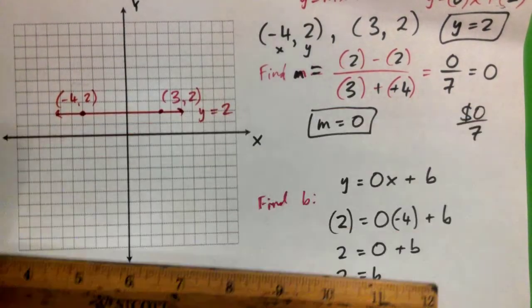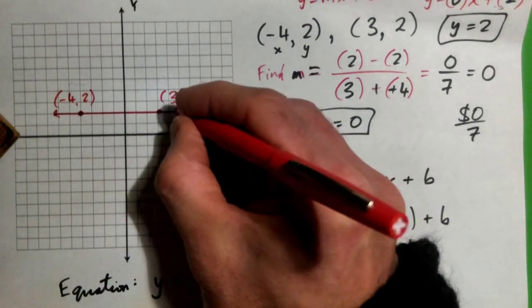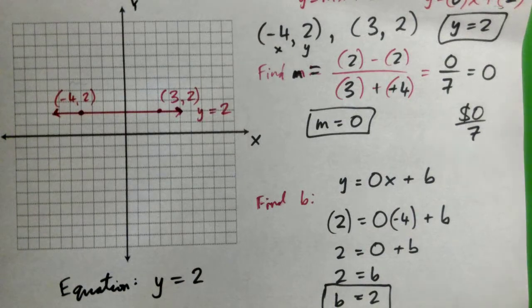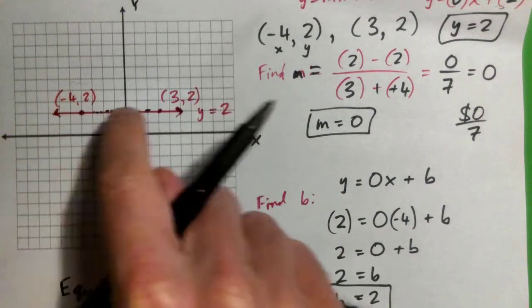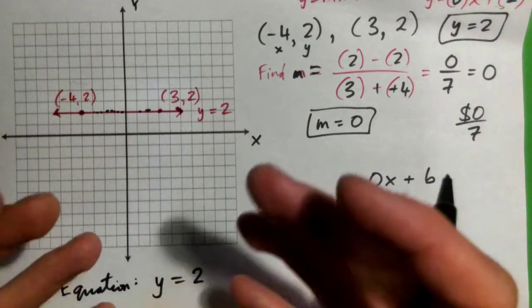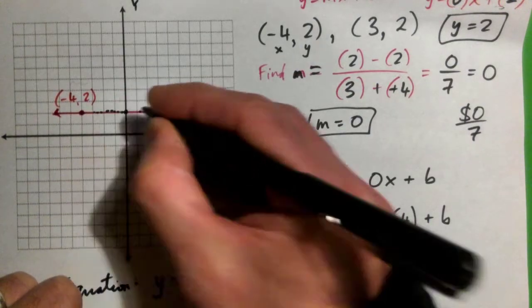Okay, that's it. I put little arrows on each end to show that this line goes on forever in both directions. It has all of these points on it. Not just the points you're given, but this line has all of these points on it. Infinite points. And something that's in common with all these points is the y value is always 2.